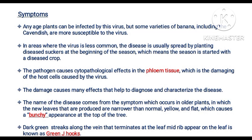In areas where the virus is less common, the disease is usually spread by planting diseased suckers at the beginning of the season, which means the season is started with a decreased crop. The pathogen causes cytopathological effects in the phloem tissue, which is damaging of the host cells caused by the virus. The damage causes many effects that help to diagnose and characterize the disease.